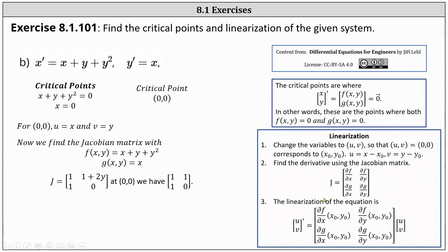In the second row, we have the partials of g. The partial of g with respect to x is one, and the partial of g with respect to y is zero. Evaluating the Jacobian at the critical point zero comma zero gives us the two by two matrix with entries one, one, one, zero.